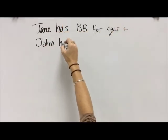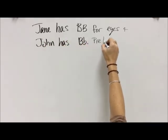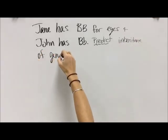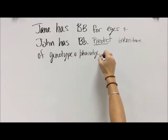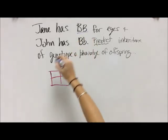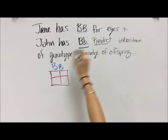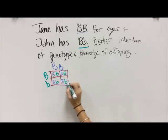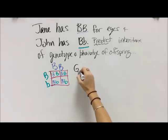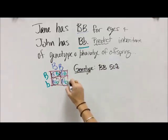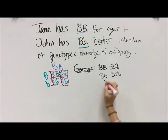Now let's look at what a problem is going to look like. Jane has big B big B for eyes and John has big B little b. We're predicting the inheritance of genotypes and phenotypes for their offspring. So we draw our Punnett Square — we have big B big B across the top and big B little b on the side. Big B's go down, big B goes across, little b goes across — Punnett Square done. For our genotypes, we have two big B big B's at 50 percent.